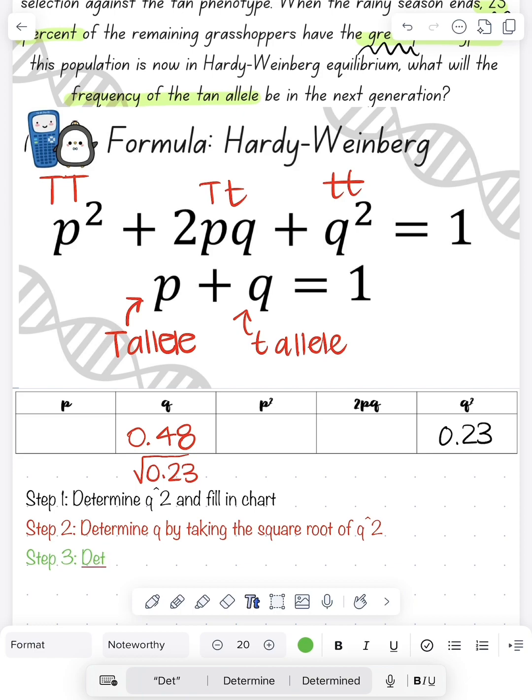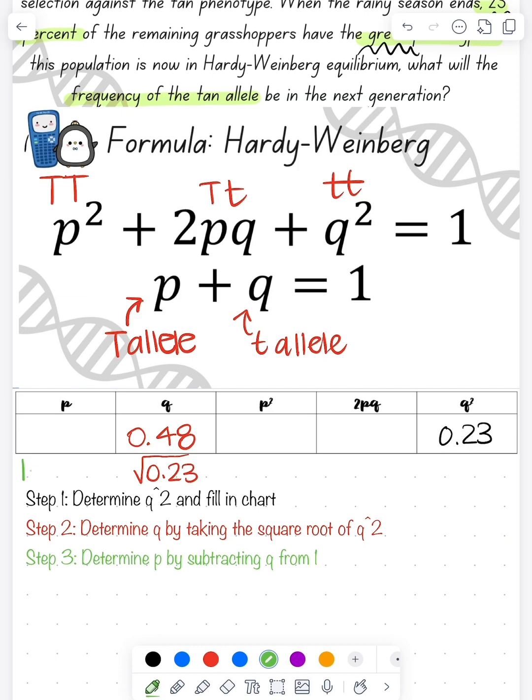Our third step, after we know that p plus q equals 1, is we're just going to say 1 minus our q. So 1 minus 0.48 is going to be 0.52.